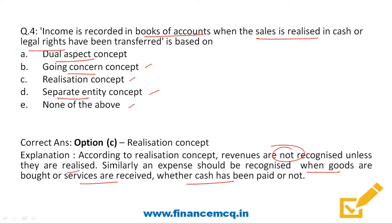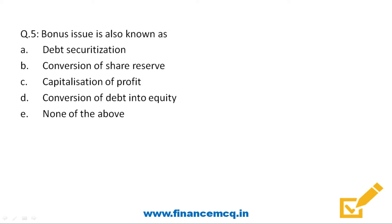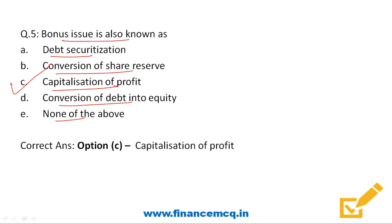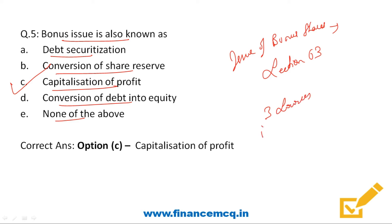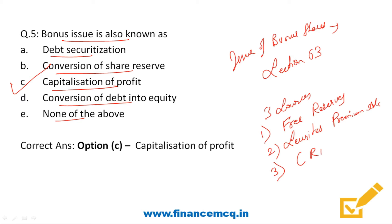Next question: bonus issue is also known as — debt securitization, conversion of shares reserve, capitalization of profit, or conversion of debt into equity? The correct answer is option C: capitalization of profit. When a company issues bonus shares, it capitalizes its profits and converts them into share capital. The provisions related to the issue of bonus shares are covered under section 63 of the Companies Act 2013. A company can issue bonus shares from only three sources: free reserves, securities premium account, and capital redemption reserve account.